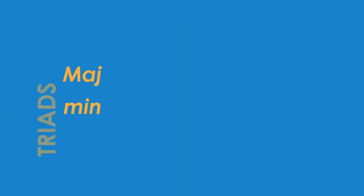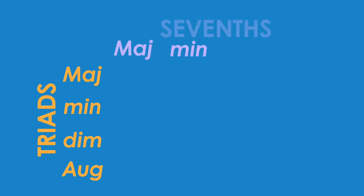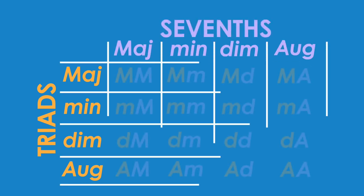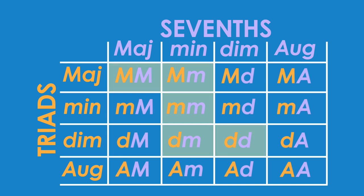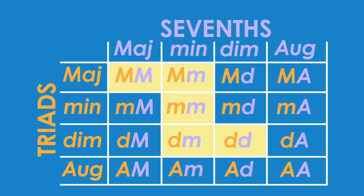So if we take all the different types of triads and all the different types of sevenths, there are sixteen different kinds of seventh chords possible. Fortunately, only five of these are commonly used in music compositions. That isn't to say the other eleven are never used — they're just less common. So we'll focus on the five common types of seventh chords today.